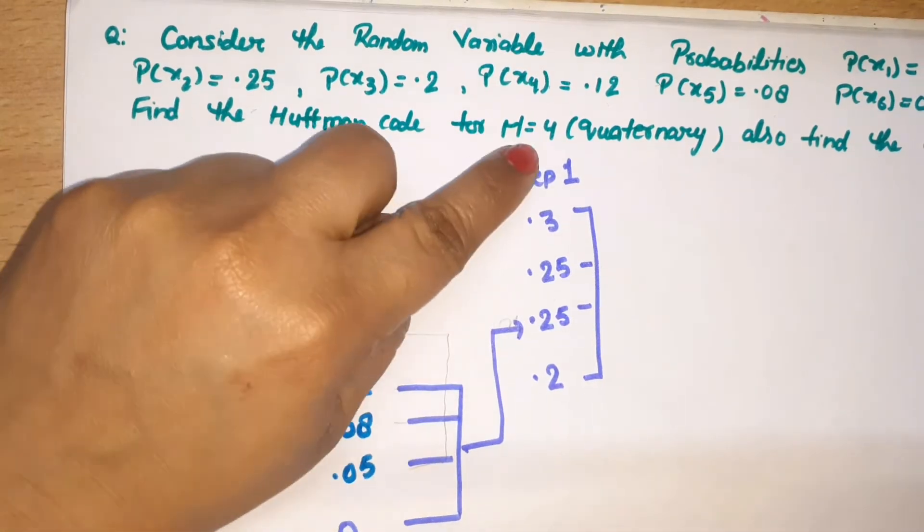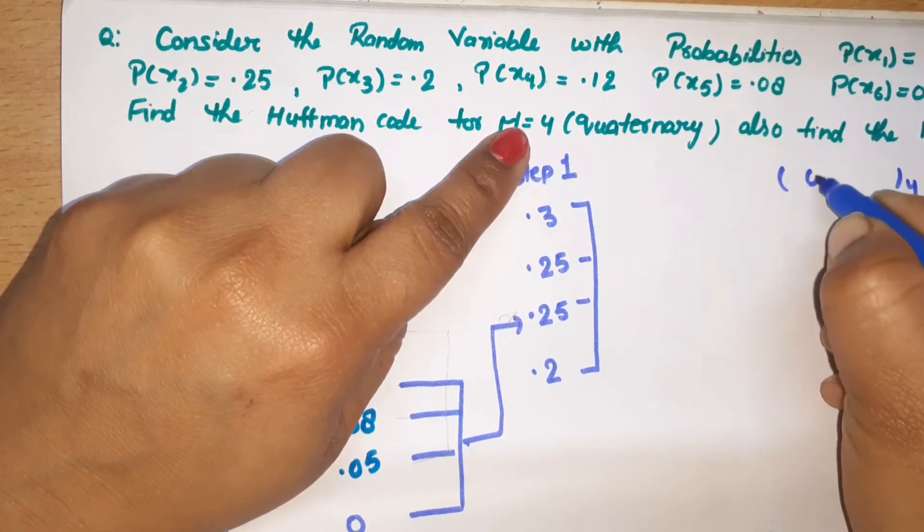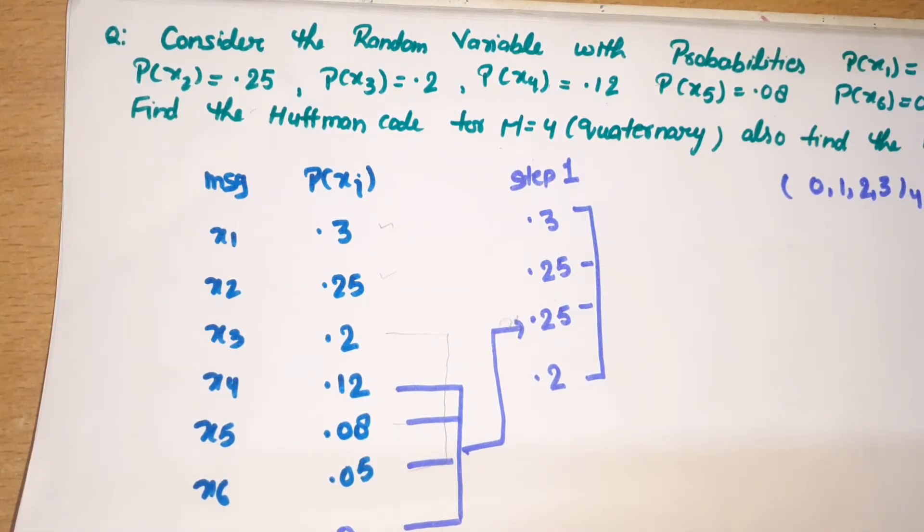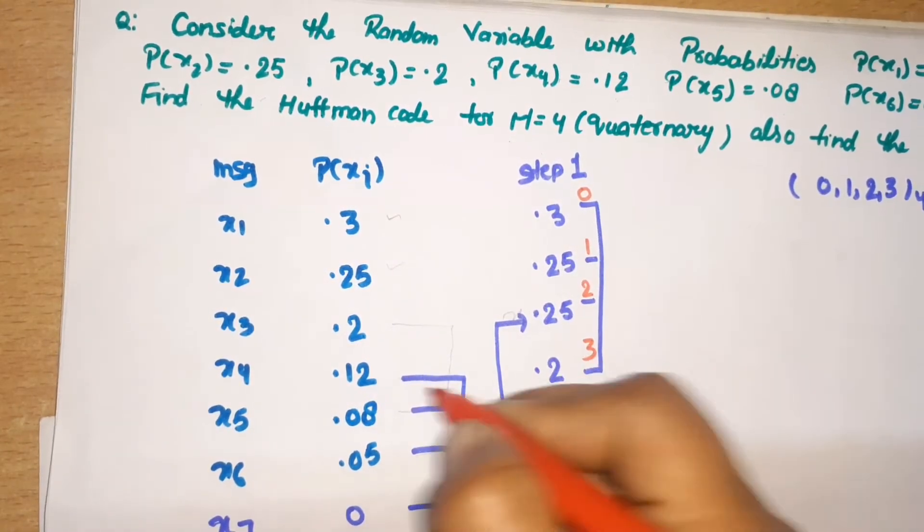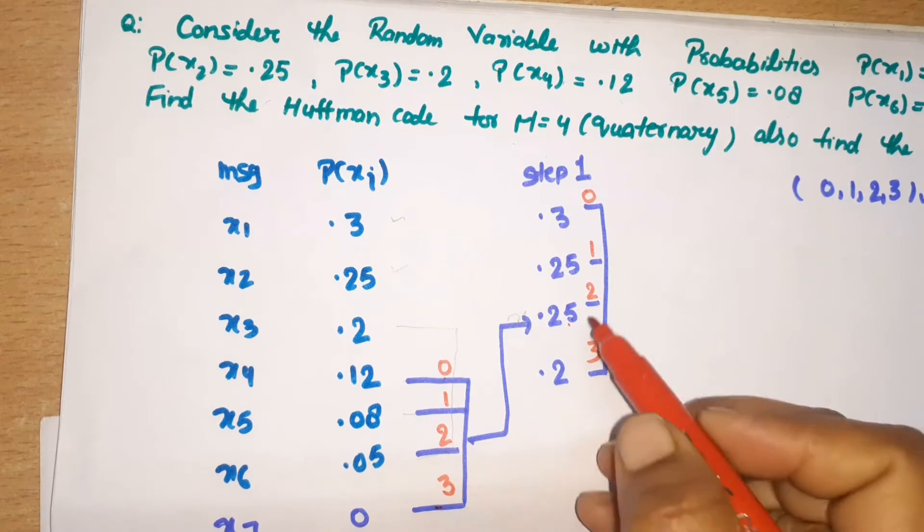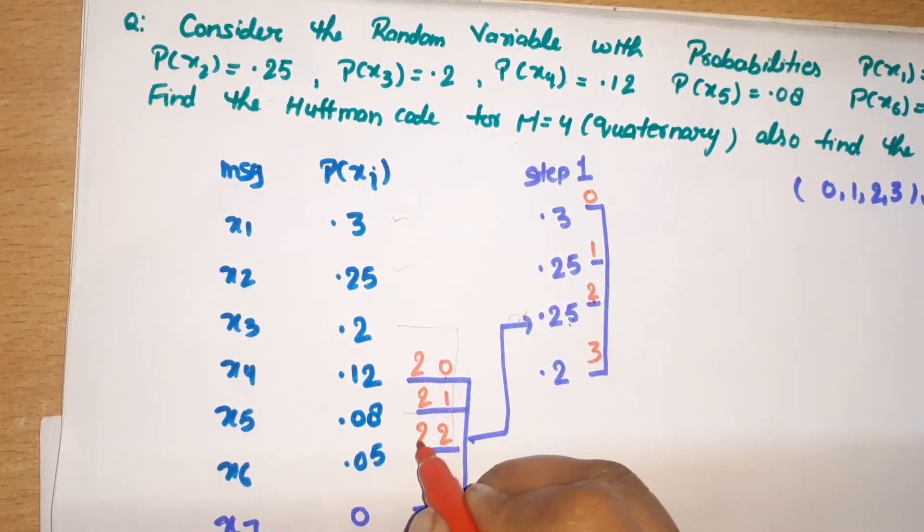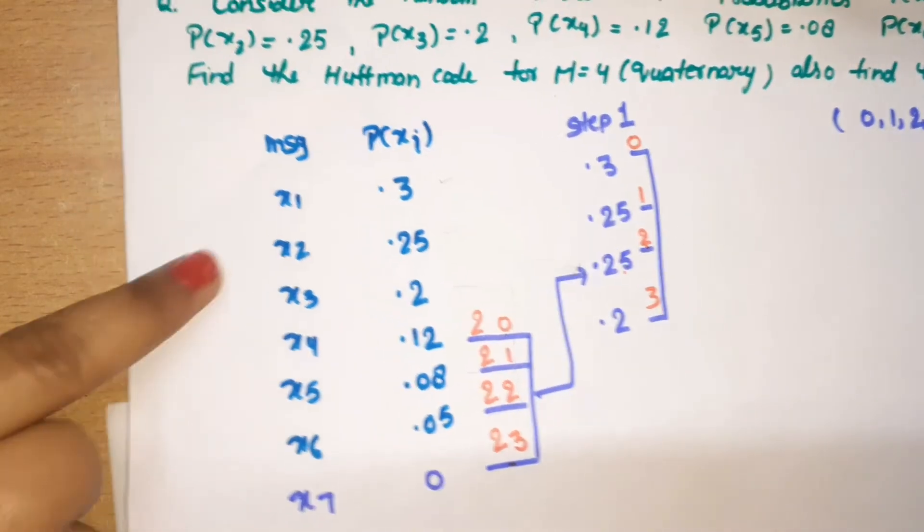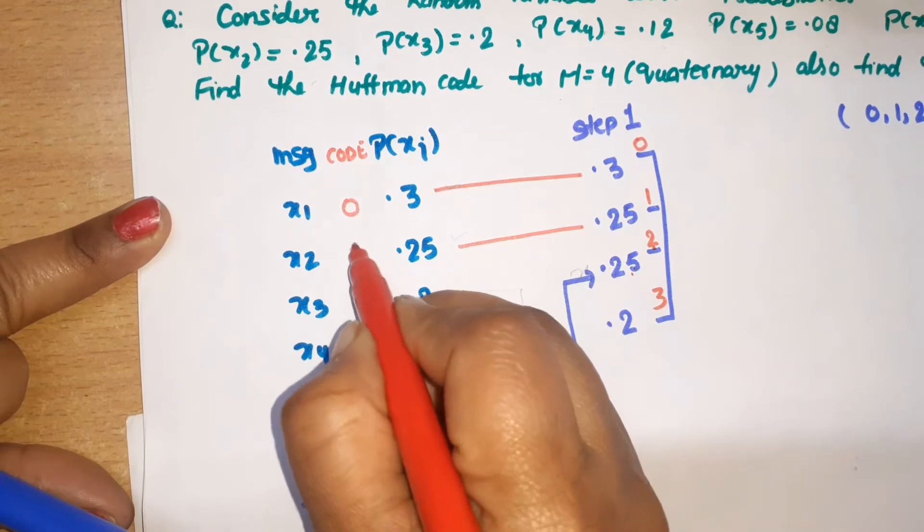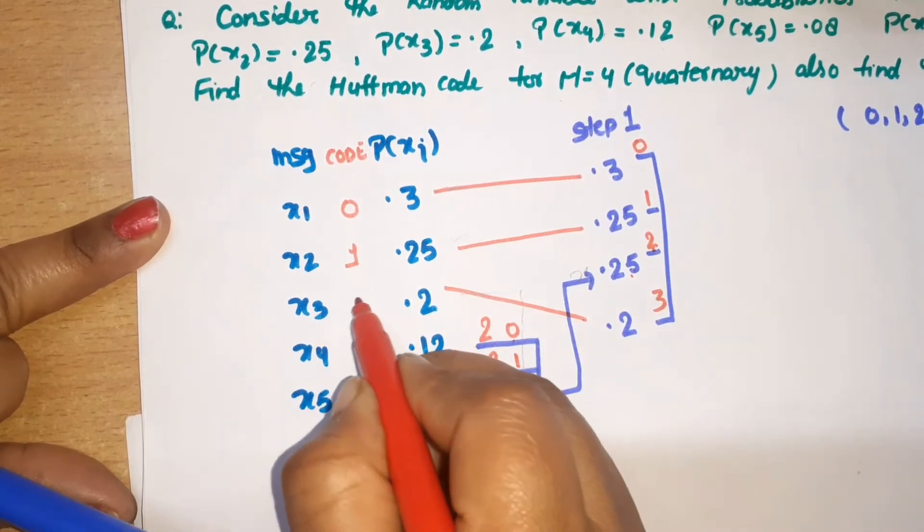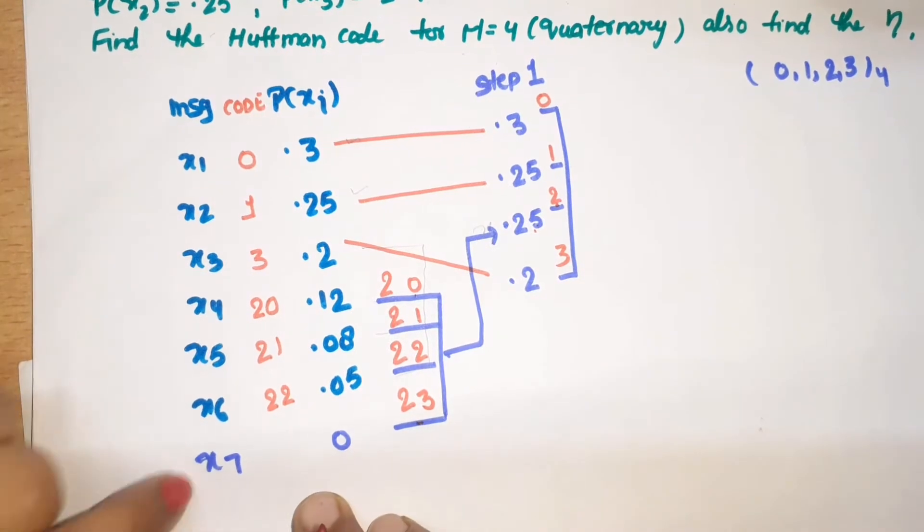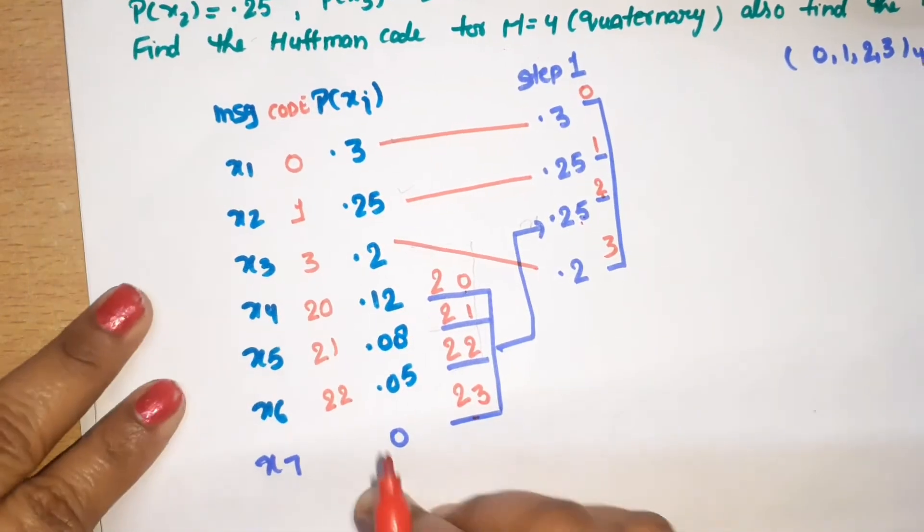Now we do the coding. Our base is 4, meaning for base 4, the numbers will be 0, 1, 2, 3. This 0.25 is the combination of these 4 values, so the code will be 2 on the left side. These are our final codes. Now I'll write the codes: 0.3 has code 0, 0.25 has code 1, 0.2 has code 3, 0.12 has code 20, 0.08 has code 21, and 0.05 has code 22. The extra probability x7 we won't consider.